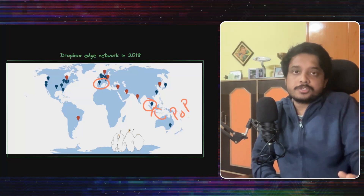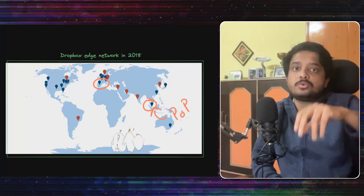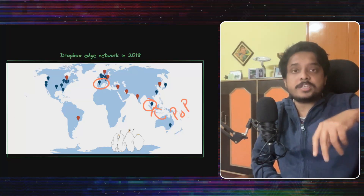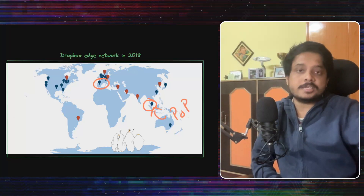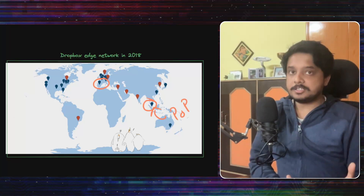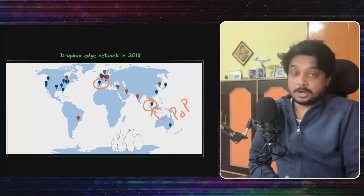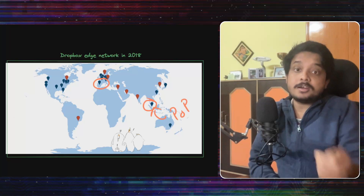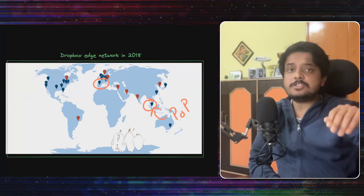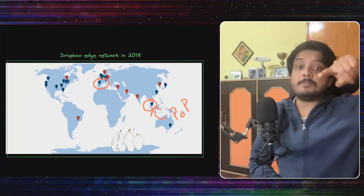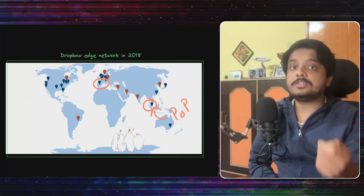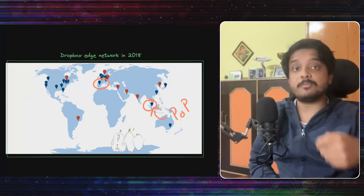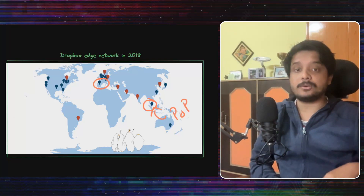So if a user is in Berlin, it makes sense to route his request to Berlin's POP itself. Because this method is the obvious one, this is what they were following earlier, and this is what gave that upper line in the graph. Now we want to talk about how they changed this and brought the latency down.